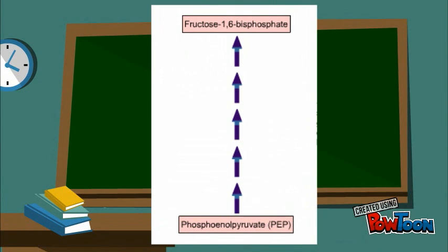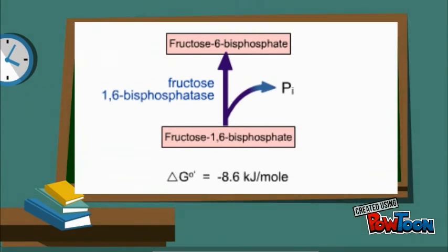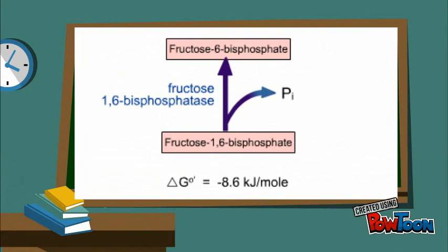Gluconeogenesis proceeds by simple reversal of the steps of glycolysis up to fructose-1,6-bisphosphate. At this point, reversal of the highly exergonic phosphofructokinase step of glycolysis is avoided by a simple phosphate cleavage.